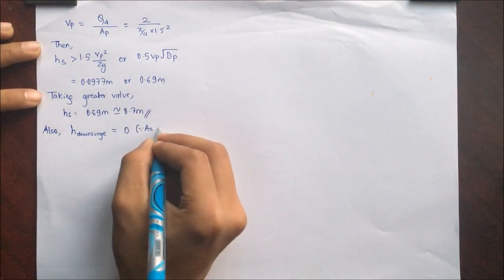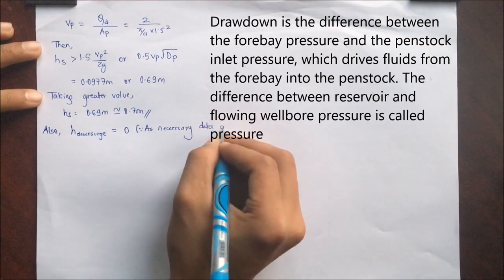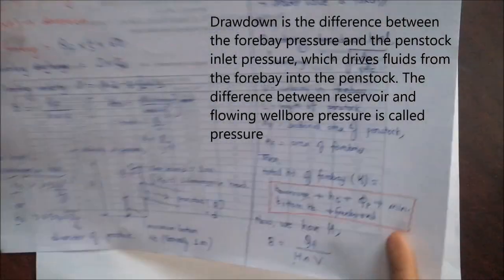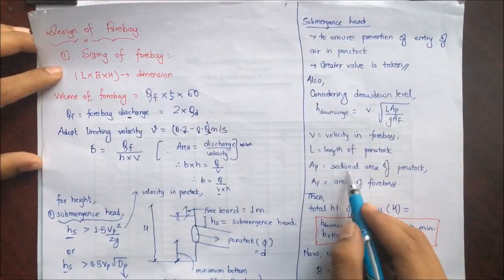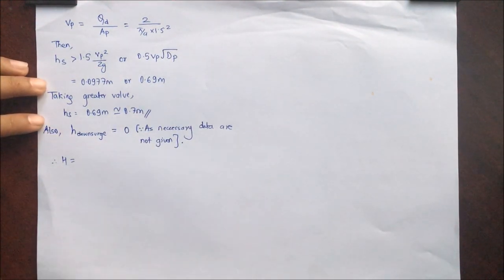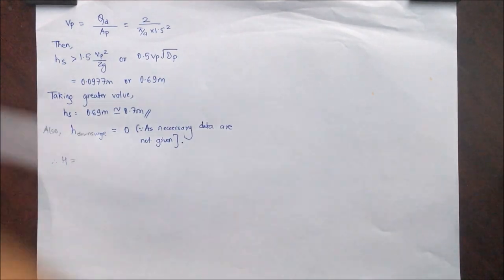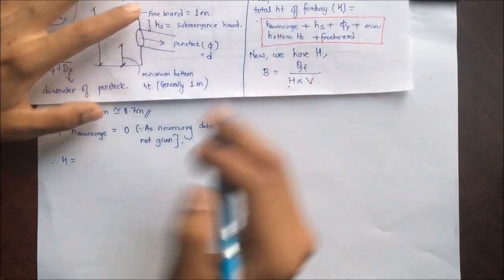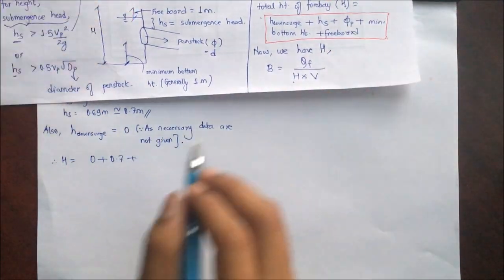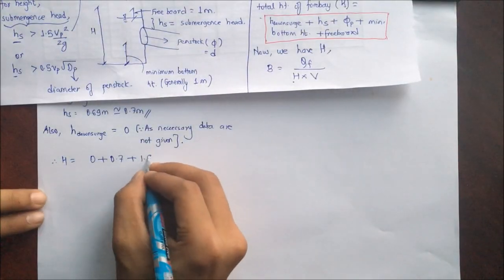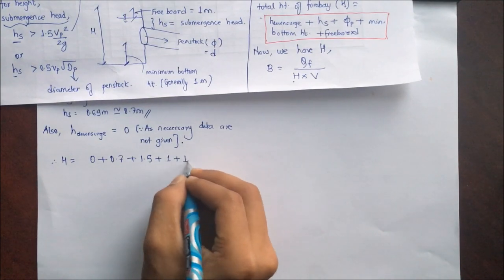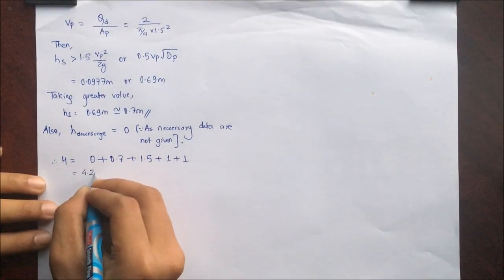H_drawdown is taken as 0 since necessary data are not given. Values like Af and Ap were not provided, so H_drawdown = 0. Now substituting values for total height H: H_drawdown = 0, Hs = 0.7 m, diameter = 1.5 m, freeboard = 1 m, and minimum bottom height = 1 m. This gives total height H = 4.2 meter.